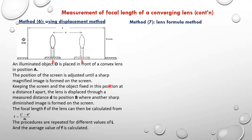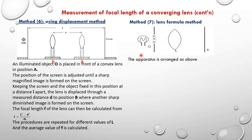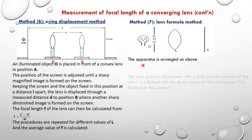Let's look at method 7, which uses the lens formula. In this method, we still have a screen, the lens whose focal length we want, and an illuminated object. We shall have the cross wire — sometimes called the wire gauze — illuminated with light from a bulb. The cross wire becomes the object. This is the screen and this is the lens. We move the lens along the optical axis until a sharp image of the wire gauze is formed on the screen.